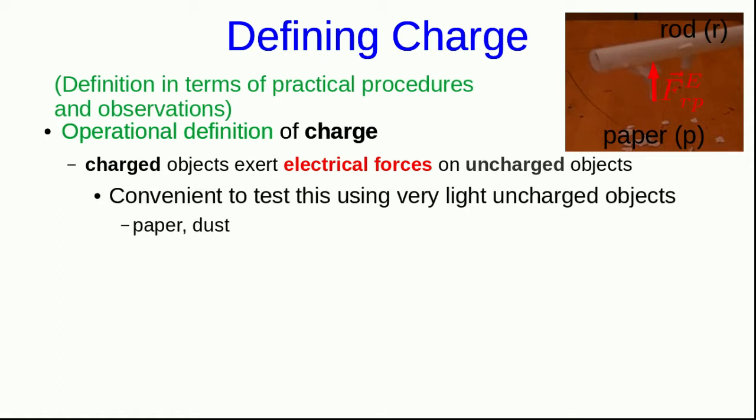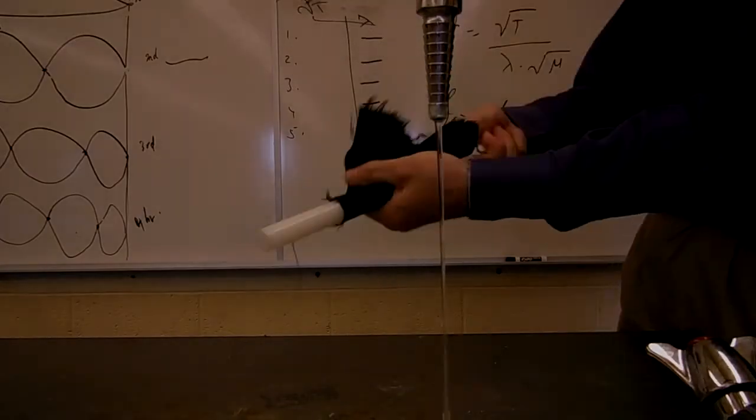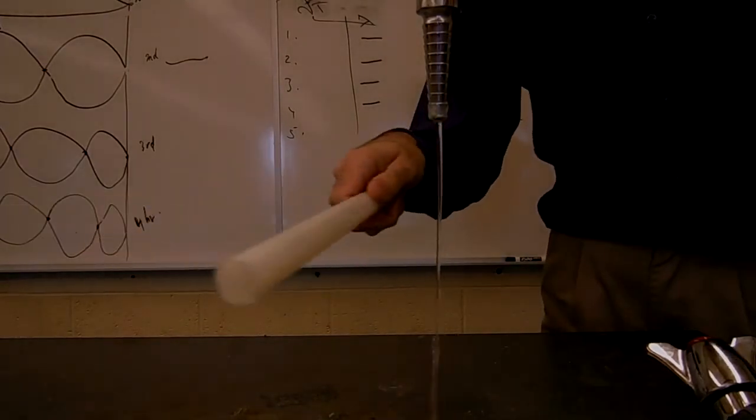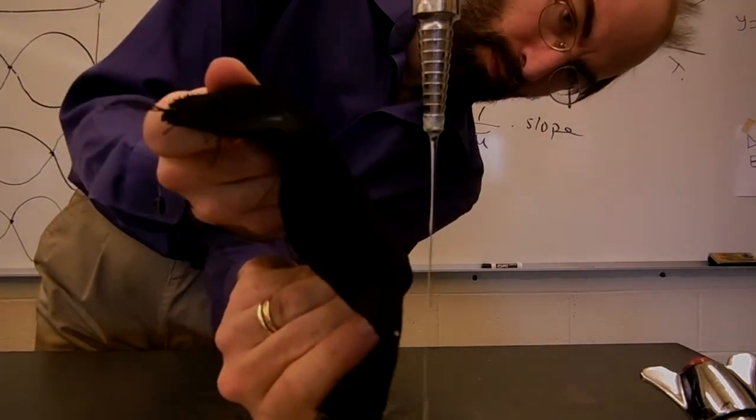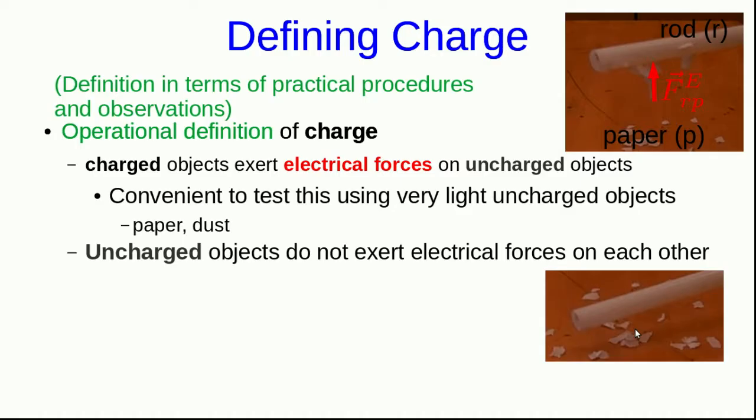It's convenient to test this using something like the paper because the paper is very light and so it's easy to pick up. We could do an even more sensitive test using dust. You can see here that the plastic rod will also exert a force on a stream of water, and so will the piece of wool. Uncharged objects don't exert electrical forces on each other, so the paper sitting on the desk isn't attracting the other paper on the desk, and before we rubbed the rod, it also exerted no force on the paper.